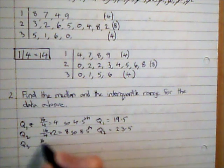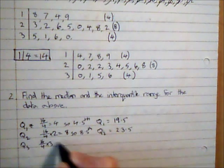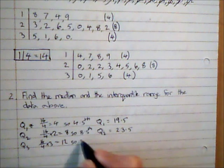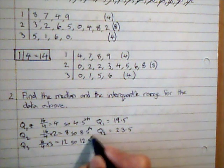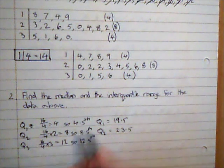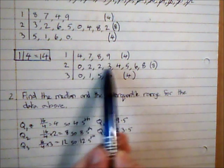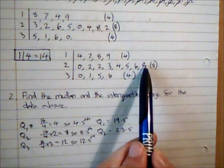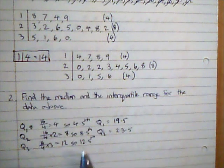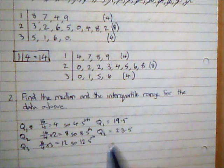And then Q3 is 16 over 4 times 3, which is 12. So I want to go to the 12.5th value. So 1, 2, 3, 4, 5, 6, 7, 8, 9, 10, 11, 12, 13. So it's between 28 and 30. So that's 29.